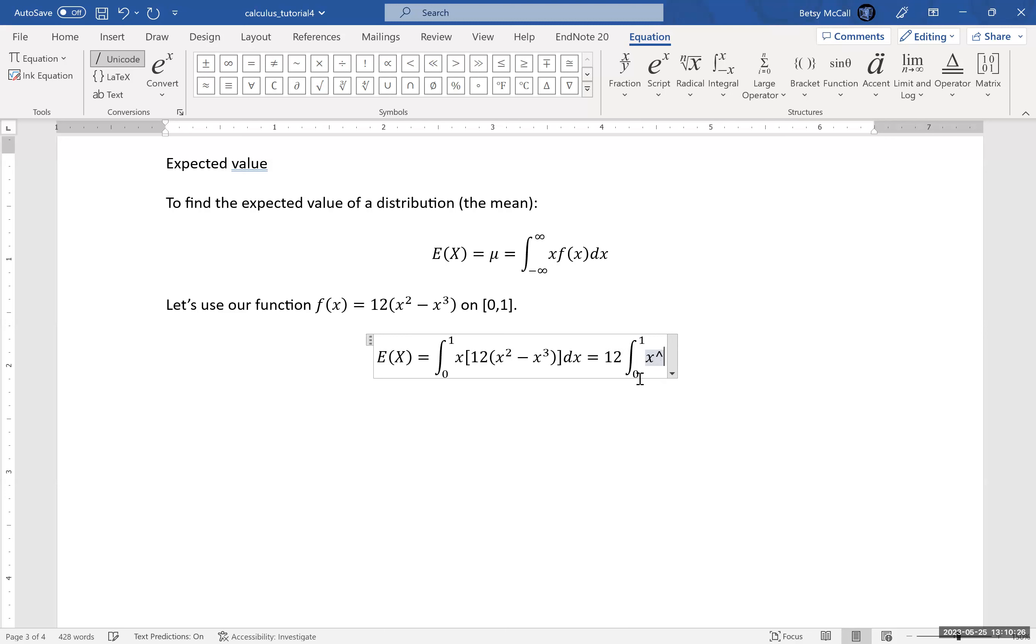That's going to be x³ - x⁴. When I integrate that, I'm going to get 1/4·x⁴ - 1/5·x⁵, evaluated from 0 to 1. And that's going to give me 12 times 1/20. 12/20 cancels to 3/5.